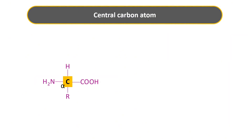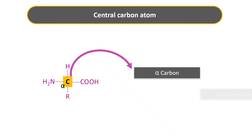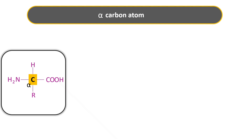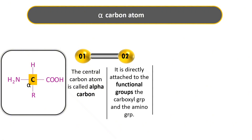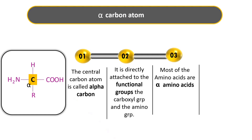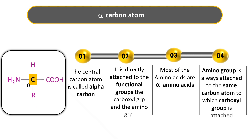The central carbon of amino acids is called by two names: alpha carbon atom, and asymmetric or chiral carbon atom. The central carbon is called the alpha carbon because it is directly attached to the functional groups — the amino group and the carboxyl group — and therefore most amino acids are alpha amino acids. If asked why, your answer should be: the amino group is always attached to the same carbon atom to which the carboxyl group is attached, and therefore most amino acids are alpha amino acids.